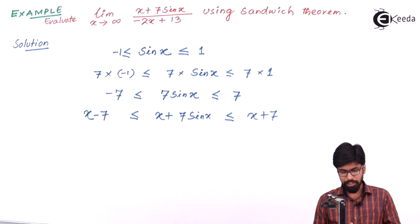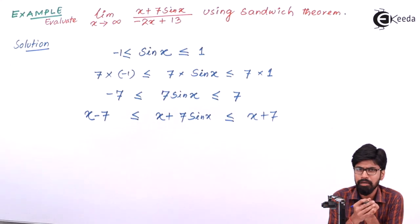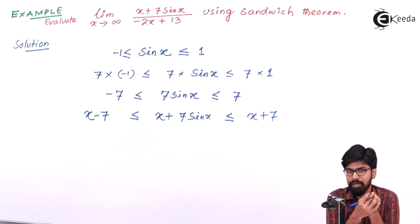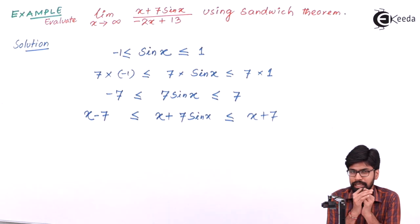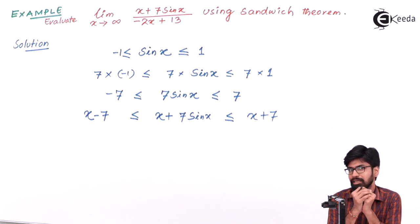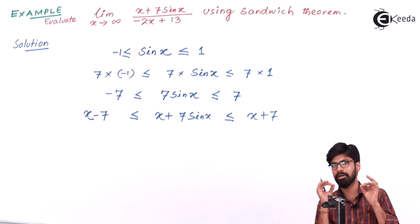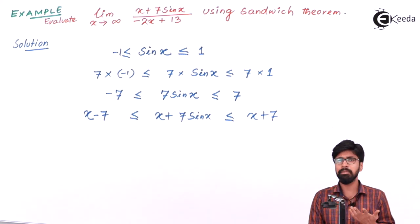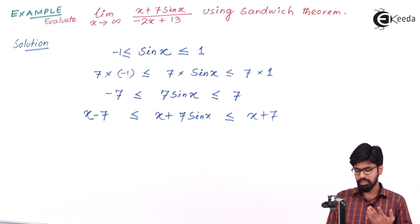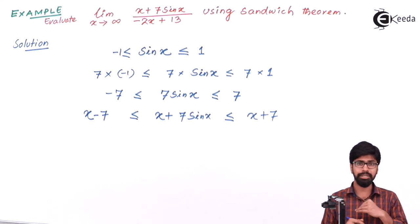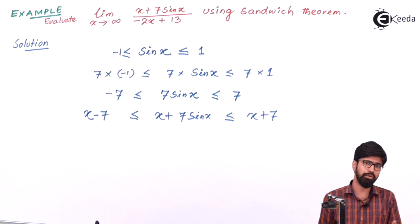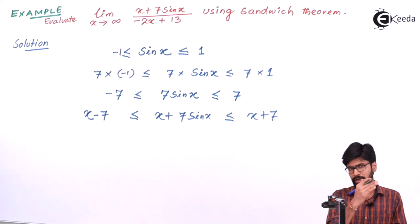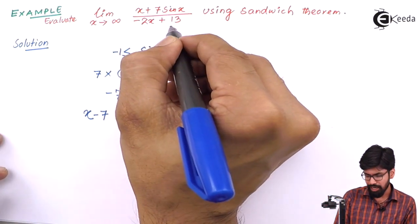Now, if we divide a positive number in an inequality, the inequality does not change. But if we divide by a negative number, the inequality will change — meaning if it was less than or equal to, it will become greater than or equal to.